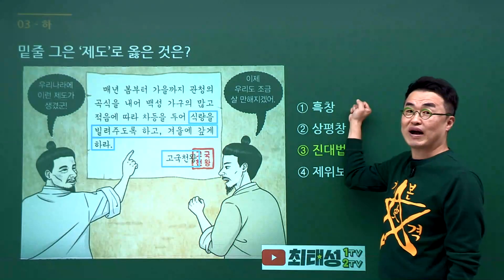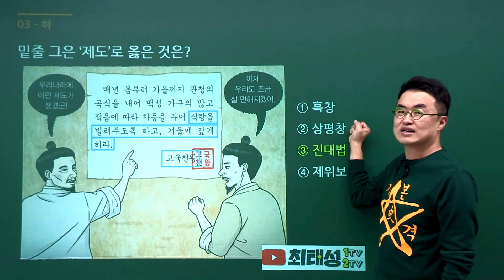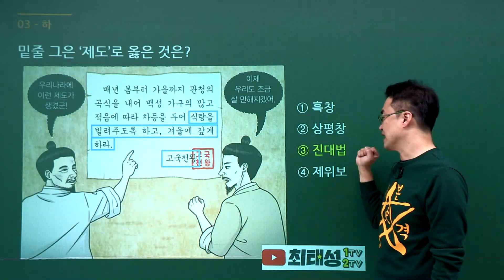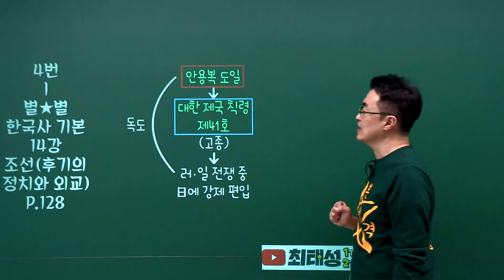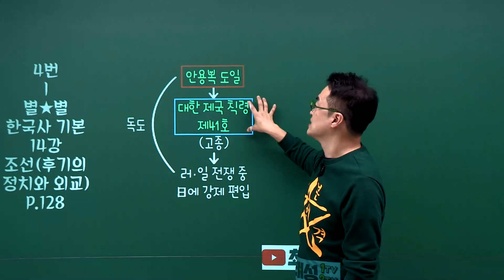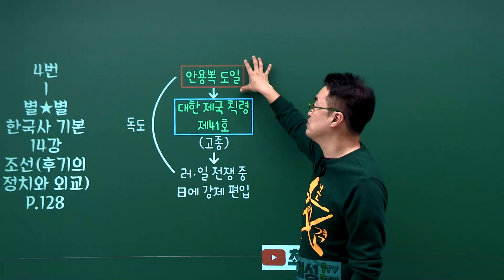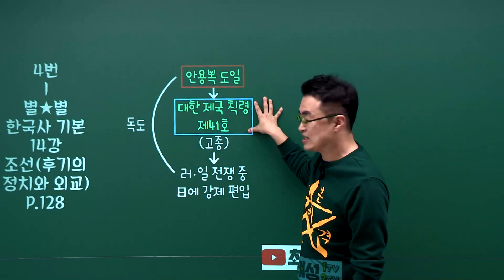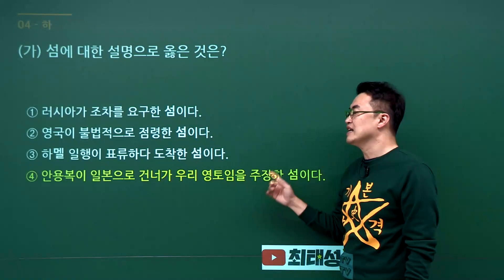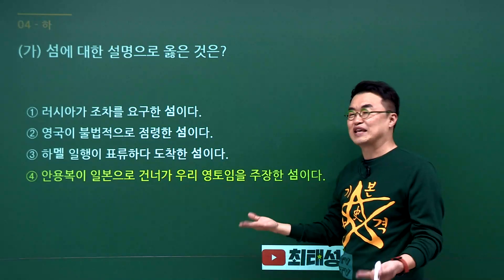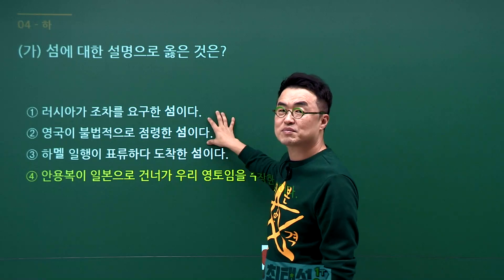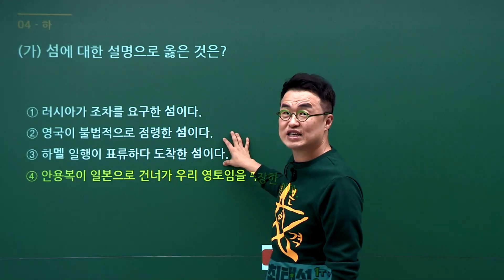흑창은 태조 고려 왕건 때 시행했던 것이고, 상평창도 물가조절 기관입니다. 고려시대 제위보는 빈민과 병자들을 구제하기 위한 기관입니다. 정답은 3번입니다. 독도와 관련해서 대한제국 칙령 41호, 그리고 안용복이 이를 확인했던 인물이라는 내용을 배웠습니다. 대한제국 칙령 41호가 나왔으니 독도이고, 정답지는 안용복입니다. 러시아가 조차를 요구한 섬은 절영도, 영국의 불법 점령은 거문도, 하멜 표류는 제주도입니다. 정답은 4번입니다.